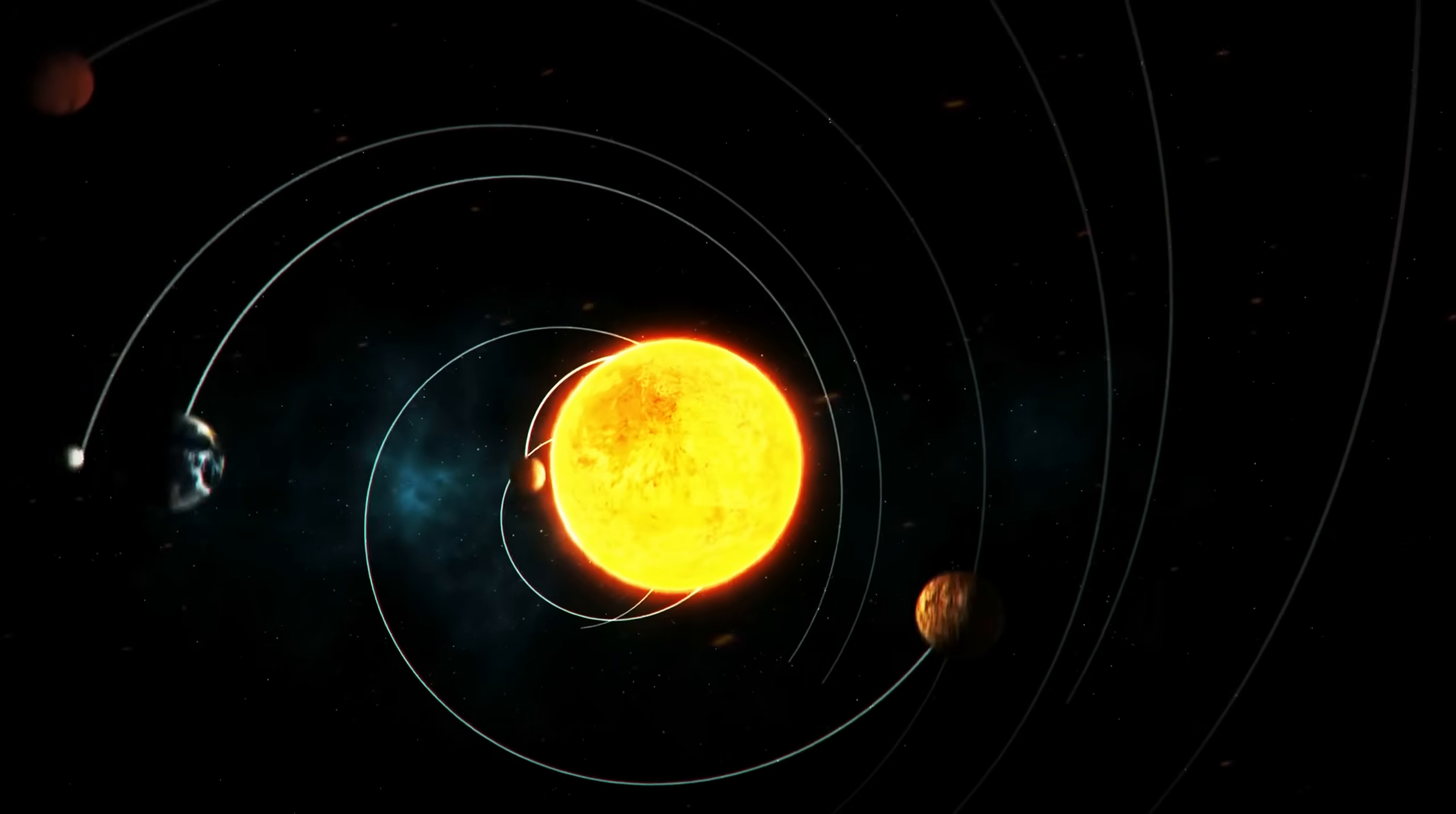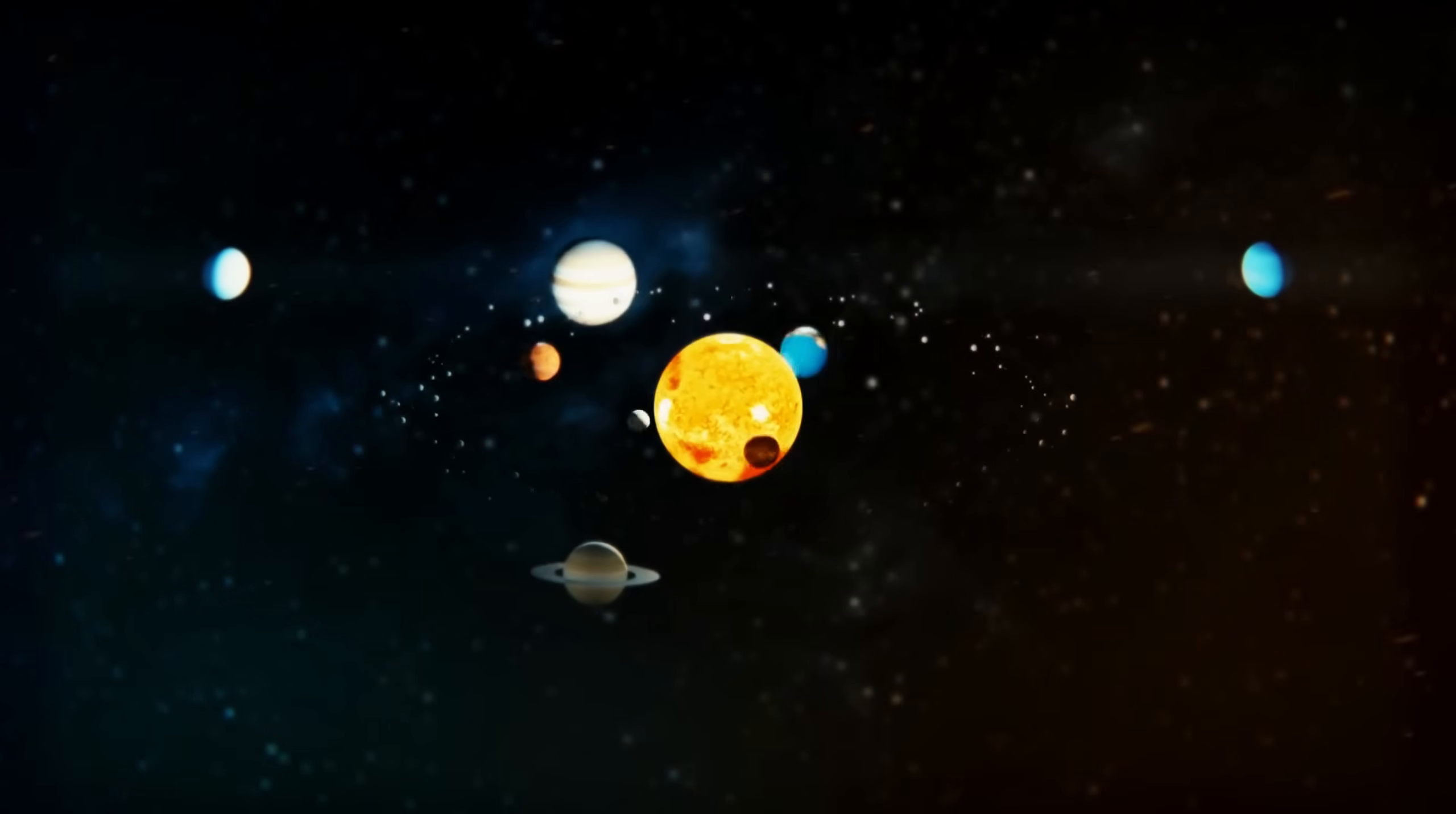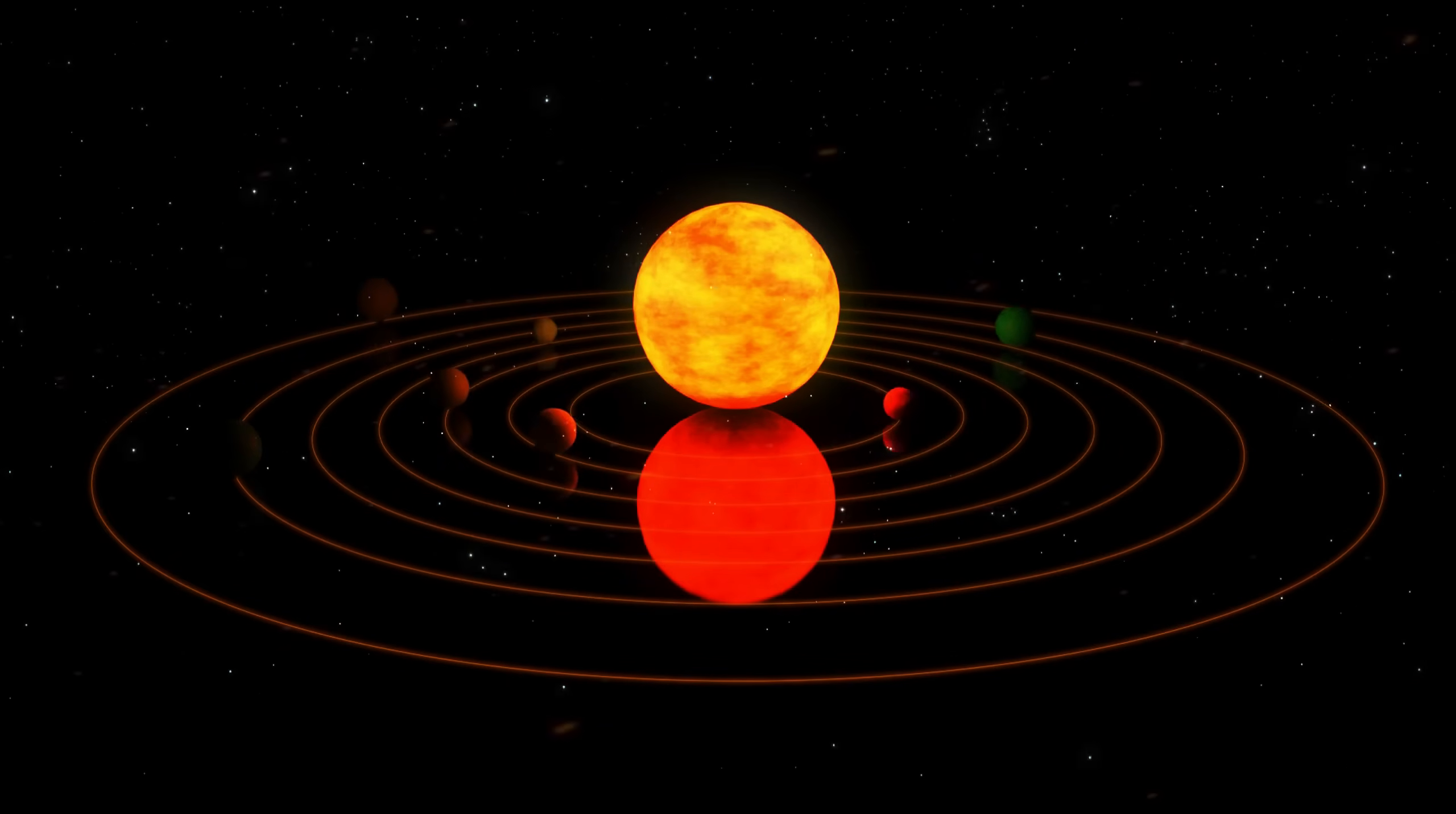According to NASA, the objects in the Kuiper Belt are thought to be remnants from the early solar system, dating back about 4.6 billion years. These objects are believed to preserve conditions and materials from that time, offering a glimpse into the history of the solar system.